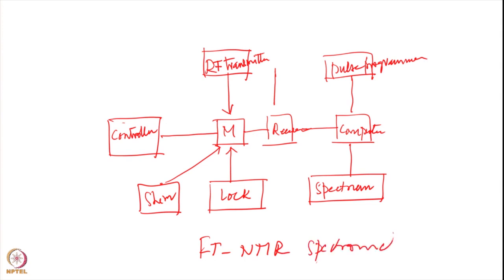This is a rough picture — there are greater details which one discovers when buying or working with the spectrometer. These are the essential elements. FTNMR results in some very special features compared to CWNMR, arising from the way we excite and detect the signal. These features are exclusive to FT NMR acquisition, and we will discuss them in the next class.